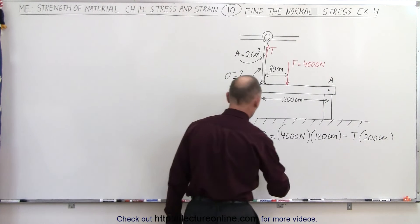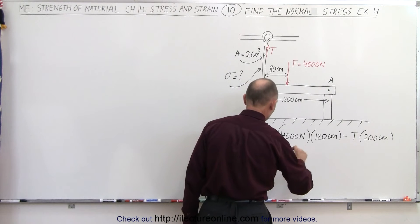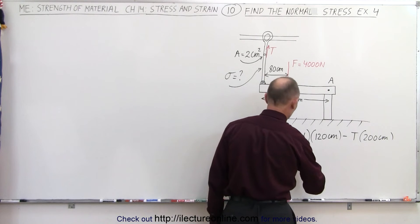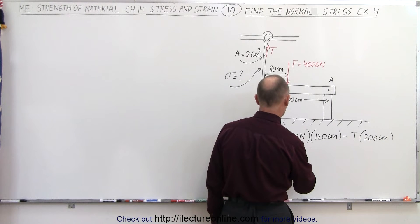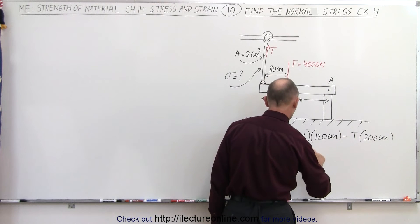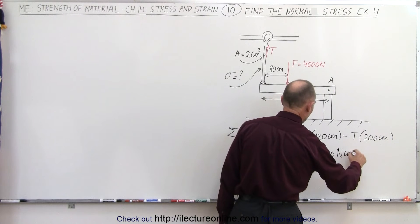Solving that for the tension, notice that will give us 200 centimeters times the tension is equal to 4,000 times 120, that's 480,000. That would be newtons times centimeters.